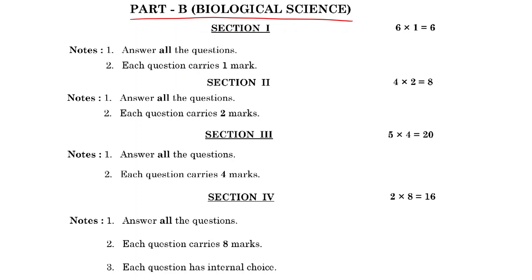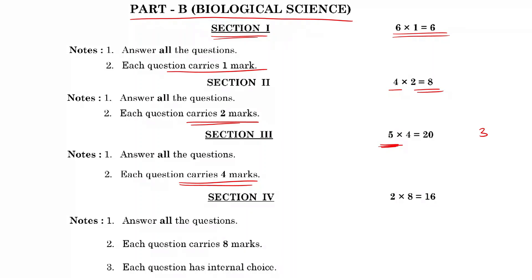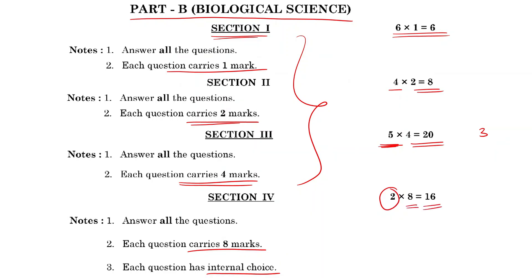For Part B, biological science: Section 1 has 1-mark questions — 6 questions total. Section 2 has 2-mark questions — 4 questions giving 8 marks. Section 3 has 4-mark questions — 5 questions (note: physical science has 3, biological science has 5). Section 4 has 8-mark questions with internal choice — 2 questions giving 16 marks. This is the key difference between physical and biological sciences sections.